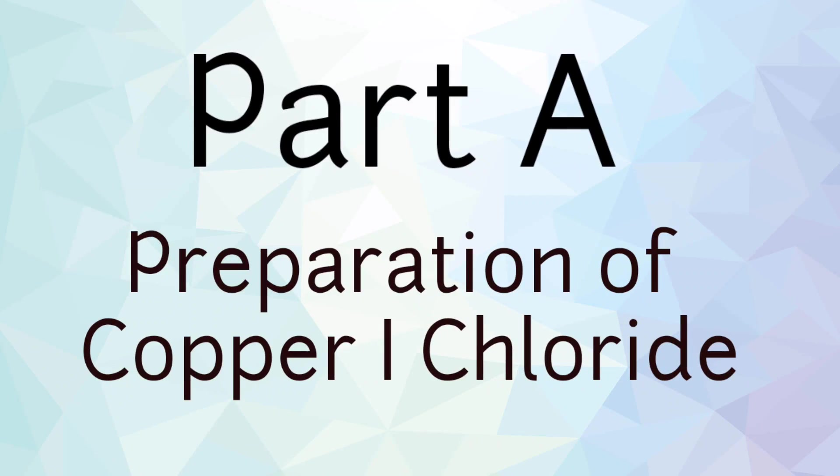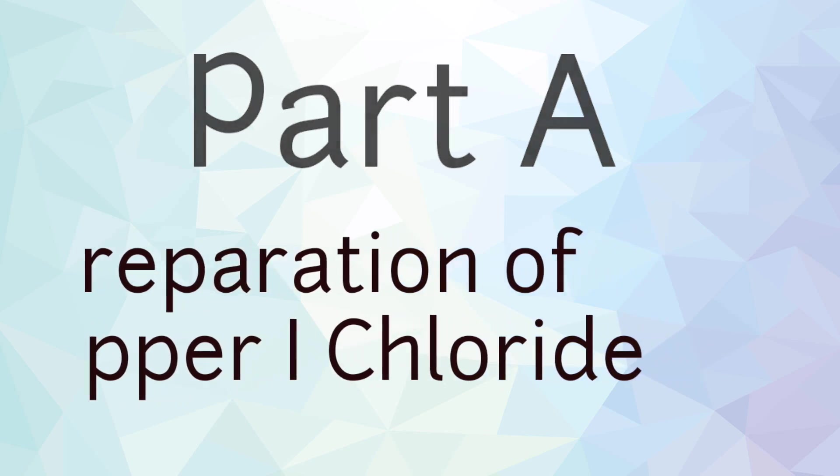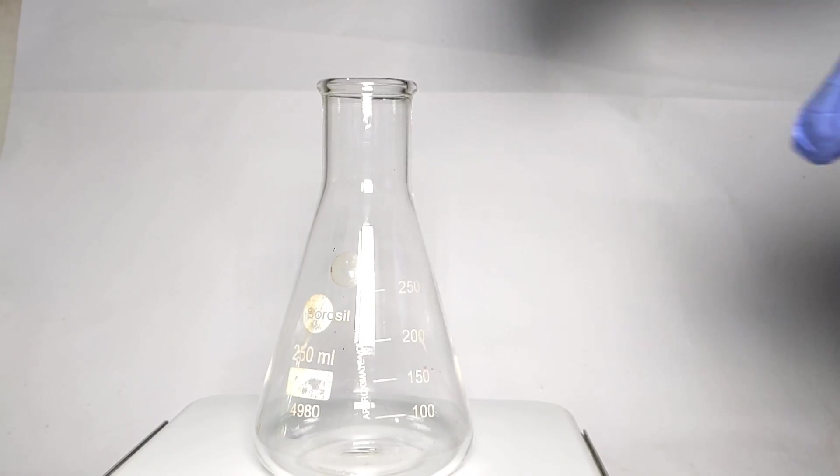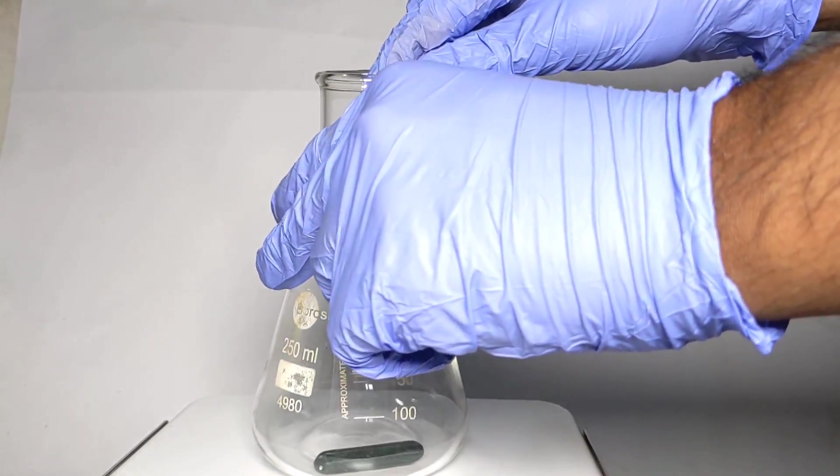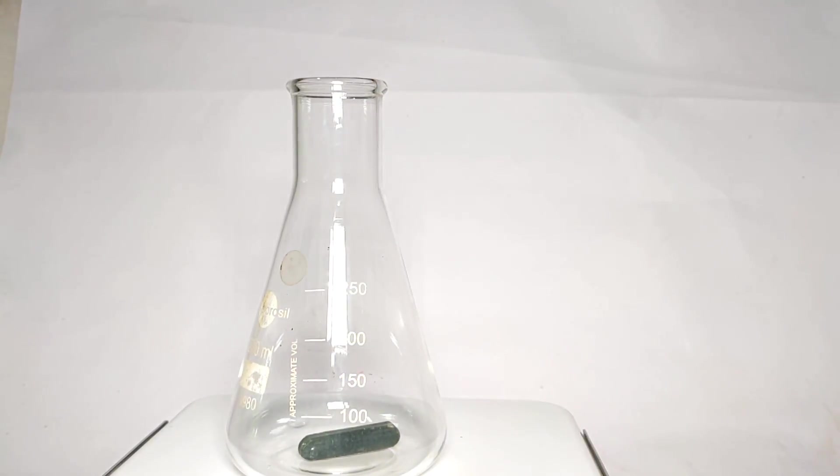In the first part, we will prepare cuprous chloride or copper 1 chloride. Start by taking a 250 milliliter Erlenmeyer flask and place it on a hot plate stirrer with a stirring bar inside.